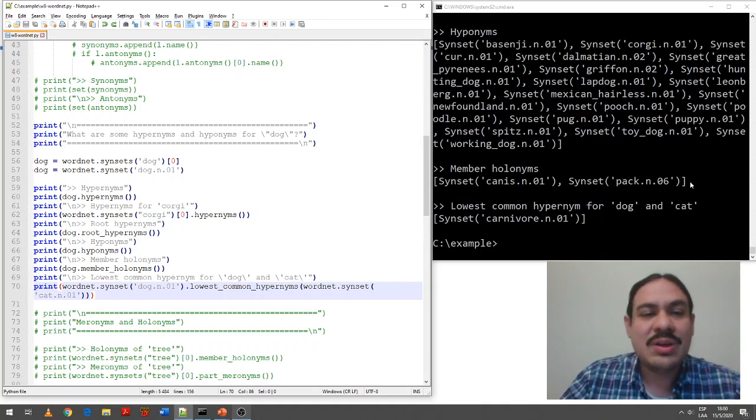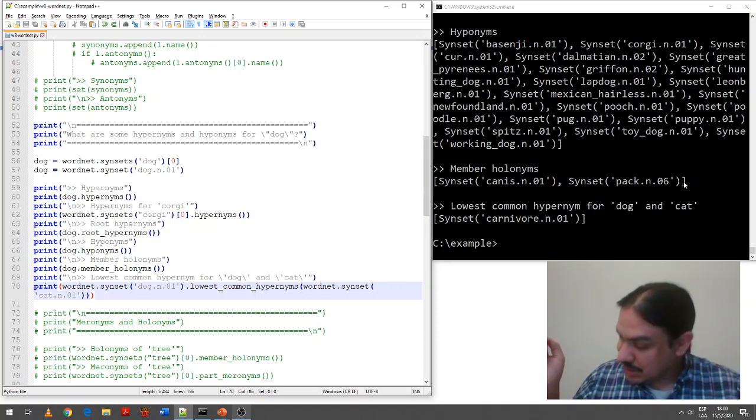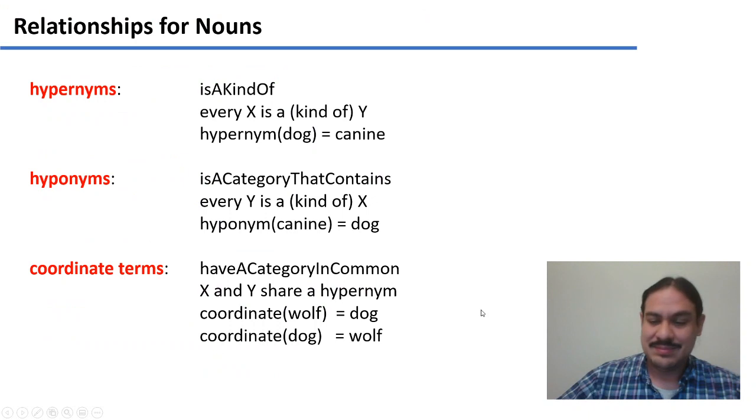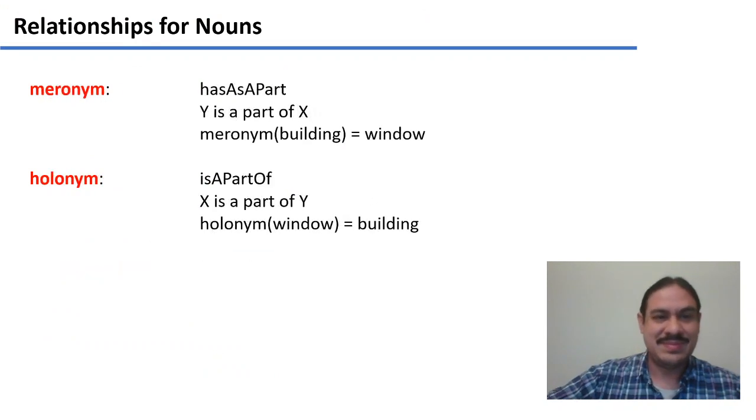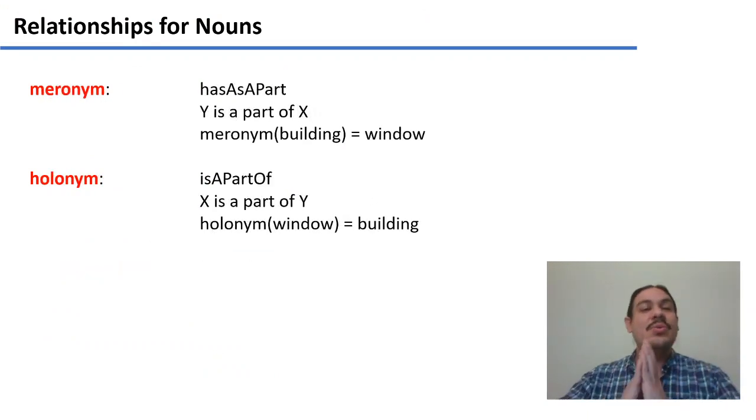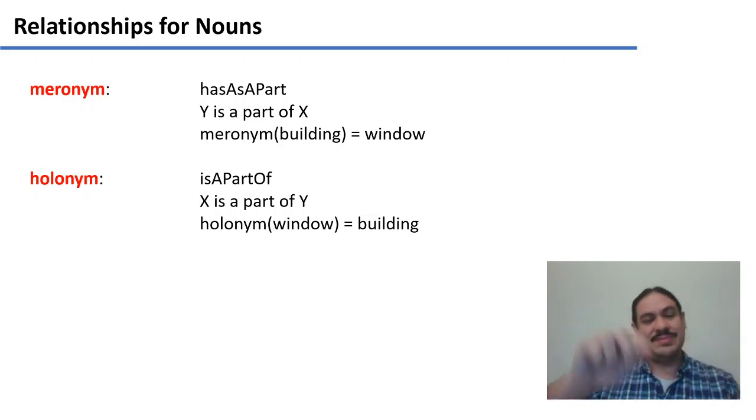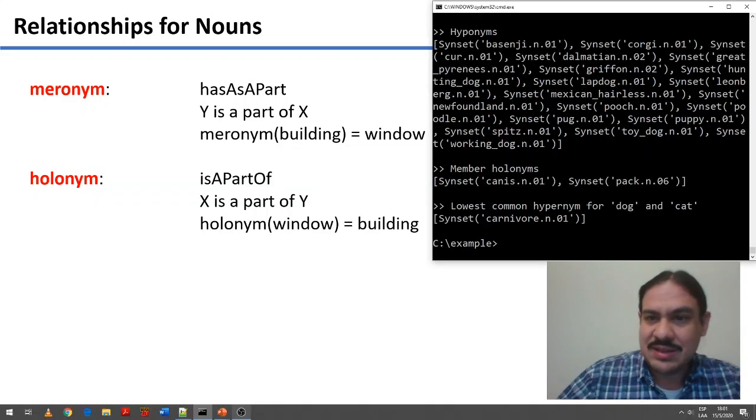We have something called holonyms, which we'll discuss them in a moment. Here we go. So, a meronym and a holonym are two related words. A meronym, a holonym is a part of something. So, a window is a part of a building.